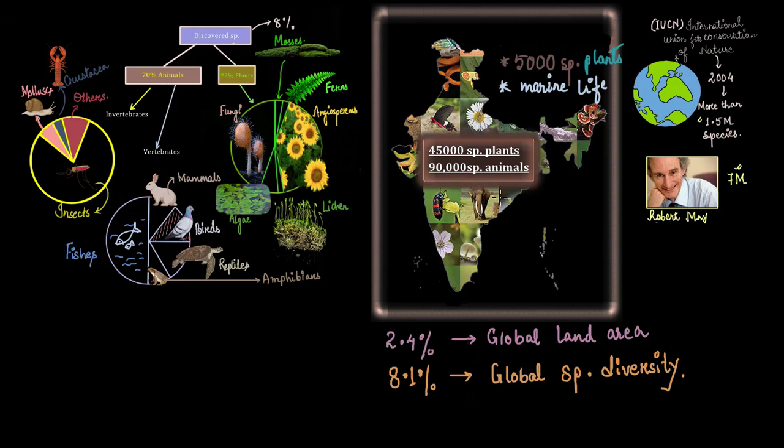But wait, if we agree on what Robert May's estimate was, then these numbers for a country like India is just the tip of an iceberg. If we consider his estimates, India is yet to discover another 1 lakh plant species and around 3 lakh animal species more. So we have a long way to go.